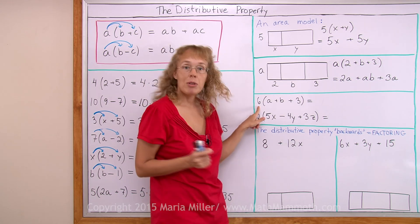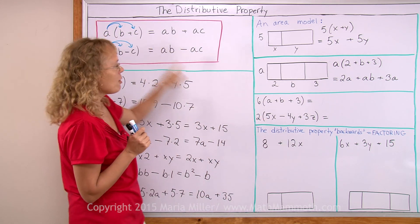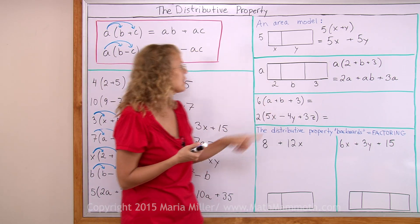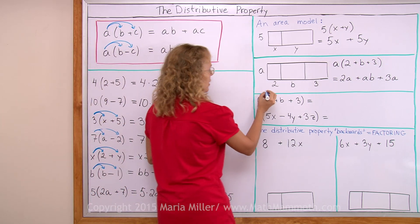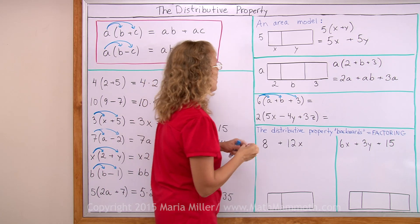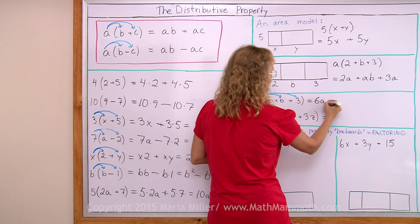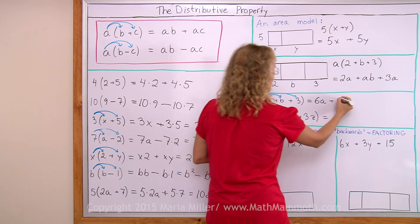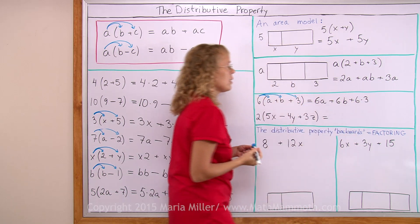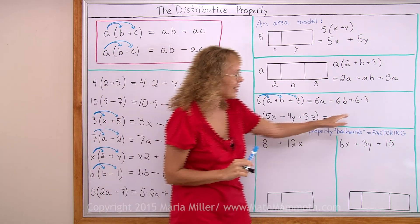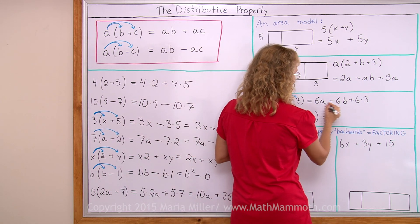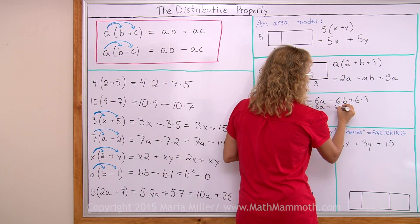Now here, again, we will use the distributive property just like here, even though there are now 3 terms here or 3 addends to be added. It still works the exact same way. It will get 6 times a, 6 times b, and 6 times 3. So I will write here 6 times a, and then add 6 times b, and still add 6 times 3. The only thing we can simplify here is 6 times 3 equals 18. So I'm running out of space, but this would be 6a plus 6b plus 18.